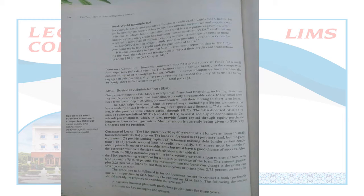Specialized small business investment companies work similarly to commercial banks. They focus on socially and economically disadvantaged businesses — those that are economically in a downturn, not performing well. Such businesses are provided funding through these specialized companies via venture capitalists. So commercial banks, insurance companies, small business investment companies, trade credits, and credit lines all serve a similar purpose: granting loans to businesses.